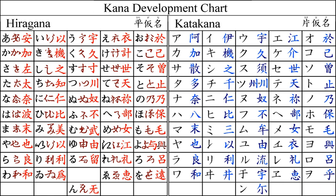Jya, jyu, and jyo are often transcribed into English as ja, ju, and jo instead, respectively, according to contemporary pronunciation.